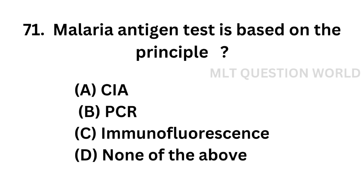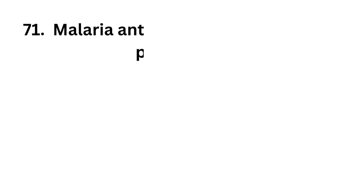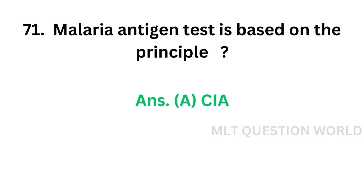Question 71. Malaria antigen test is based on the principle of: Option A: Chemiluminescence immunoassay. Option B: PCR, that is polymerase chain reaction. Option C: Immunofluorescence. Option D: None of the above. The correct answer is Option A. Malaria antigen test is based on chemiluminescence immunoassay (CIA).